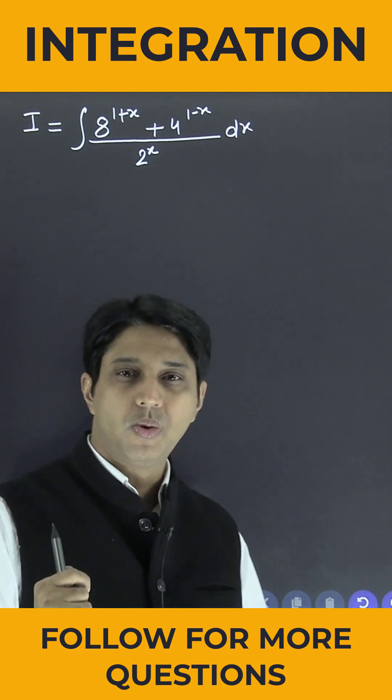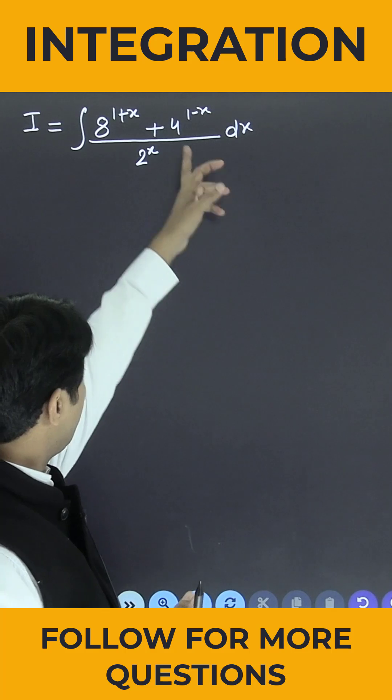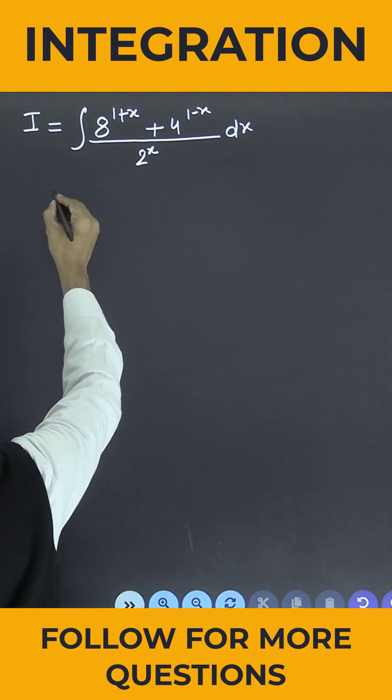Now what is the beauty of this question? We can convert 8 and 4 into powers of 2. How? So can I write like this?